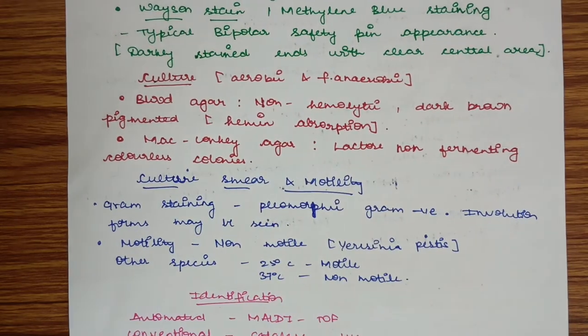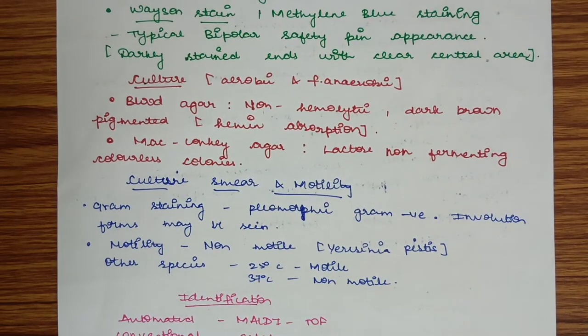Culture: the organism is aerobic and facultative anaerobic, so it may be cultured on blood agar and MacConkey agar. On blood agar, non-hemolytic dark brown pigmented colonies are seen due to hemin absorption. On MacConkey agar, lactose non-fermenting colorless colonies are seen.